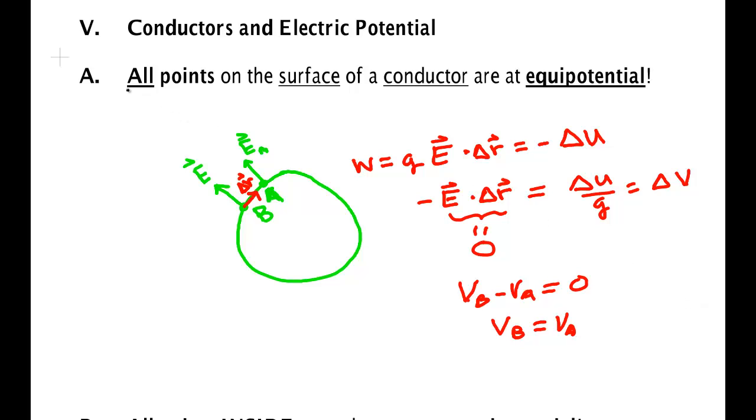All points on the surface of a conductor are at the same voltage. So if we connect a battery, say of 1.5 volts, to a metal dome, every point on the metal dome is at 1.5 volts. This is not true if you connect it to an insulator, but if you connect it to a metal, you set every point of the metal on the surface at that voltage.